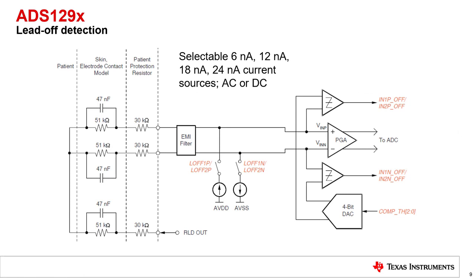The ADS129X also integrates leadoff detection using integrated programmable current sources with very high input impedance. In DC leadoff, current is injected onto the patient and then the voltage is measured by two comparators, one on the high side input and one on the low side. Each comparator reports its output continuously to a status word that is output with each sample.